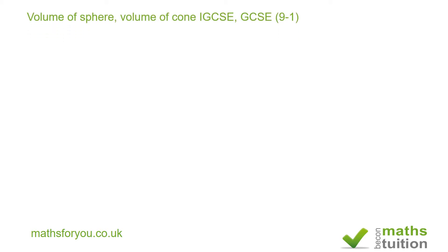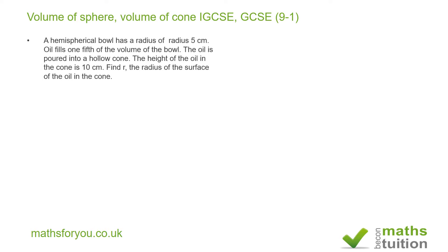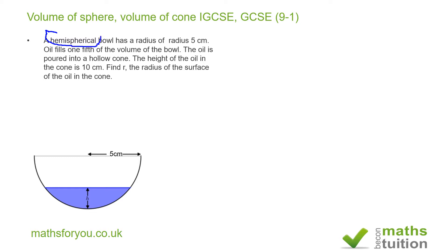Welcome to this exercise on volume of sphere and volume of cone, suggested by one of my subscribers — probably from a past exam paper. It says a hemispherical bowl — hemispherical implies it is half of a sphere — has a radius of five centimeters. Oil fills one-fifth of the volume of the bowl.